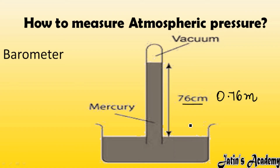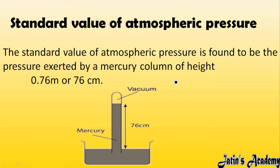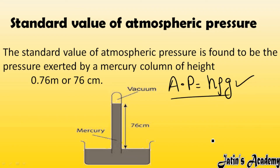To find the standard atmospheric pressure, we use the formula: Atmospheric Pressure = h × ρ × g. Here, h is the height attained by mercury in the tube, ρ (rho) is the density of mercury, and g is the acceleration due to gravity, which is always constant at 9.8 m/s².